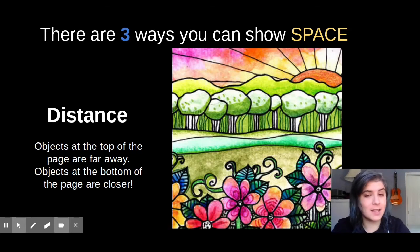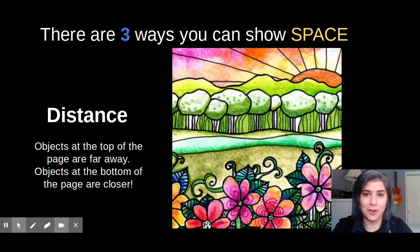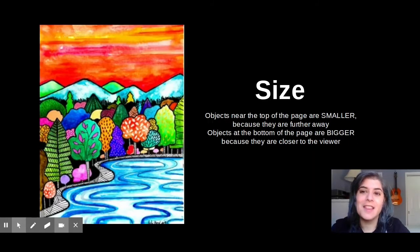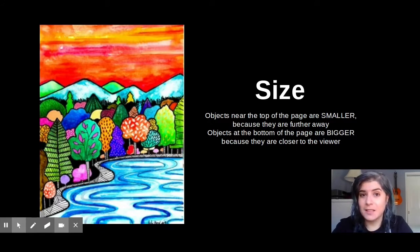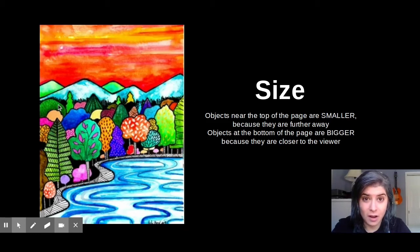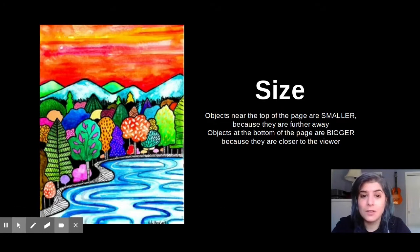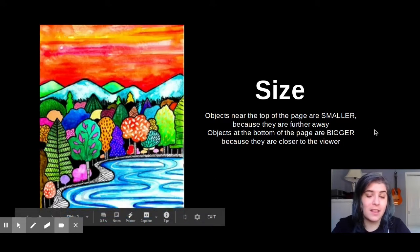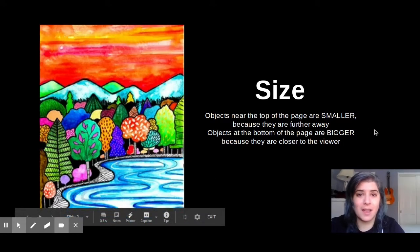This landscape is by our artist, Ms. Robin Mead. This is a way that we show space as well, by the size of our objects. You can see here that the trees in the background are so small that they don't even have color. But as you get closer and closer to the front, they get taller and bigger and more detailed. So size is another way that we can show the element of art, space.